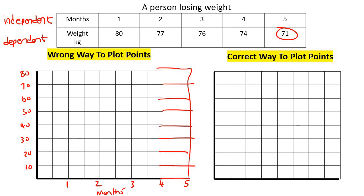There's nothing wrong with that. When I say wrong, I'm just saying it's not the best way. Because look at what's going to happen here. If we plot 1 and 80, and then we plot 2 and 77, 77 would be like there. And then 3 and 76, it's like there, maybe a little bit lower. And then 4 and 74 would be like here, maybe like there. And then 5 and 71 would be like there.